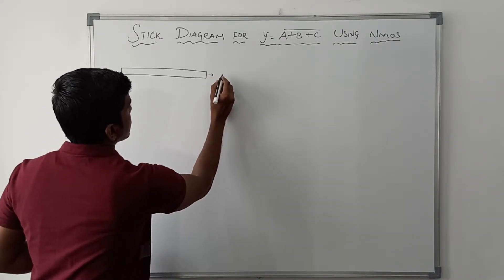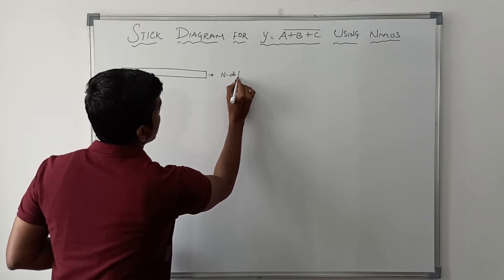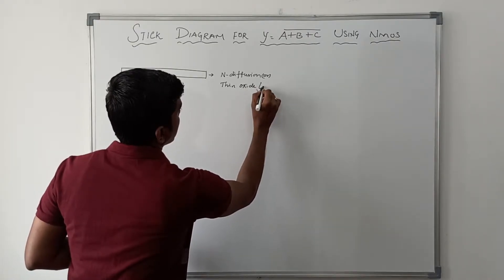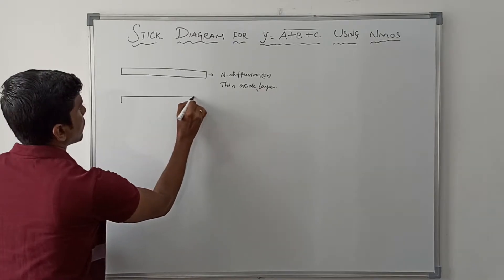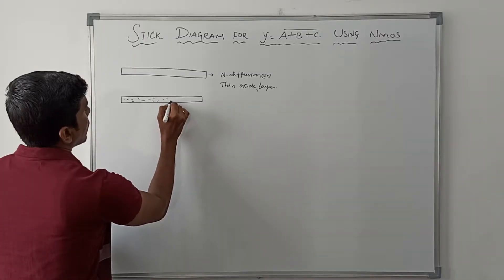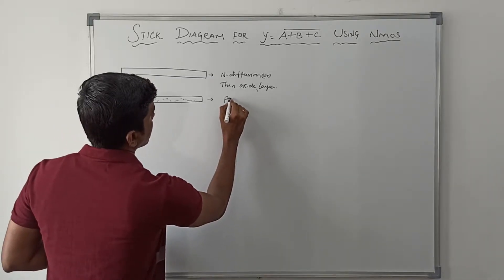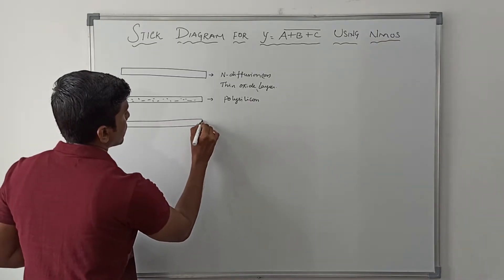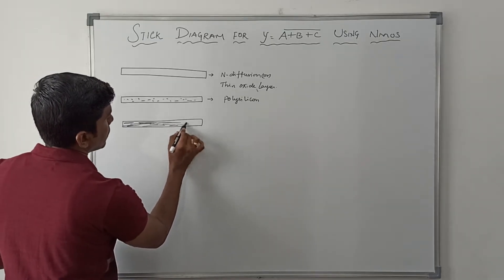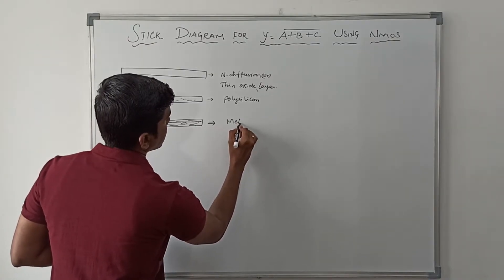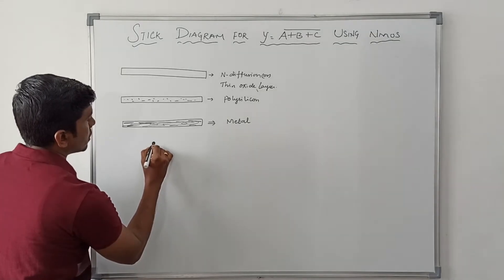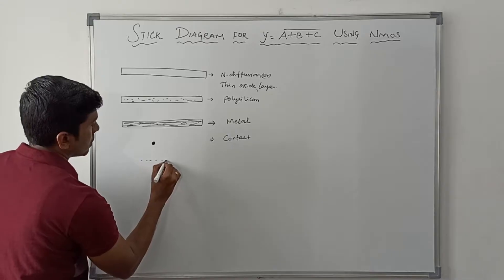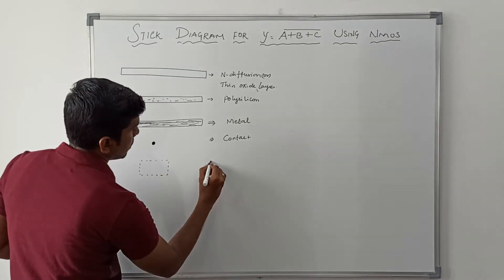This rectangular box is called the N diffusion or thin oxide layer. This line represents polysilicon. This shared rectangular box is called metal. This shared circle portion is called a contact. This dotted line box is called implant.